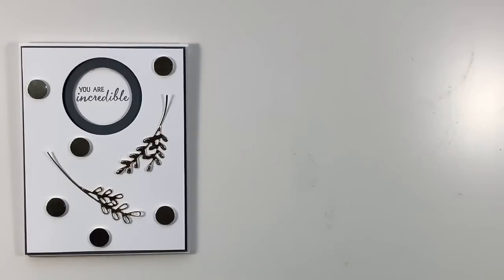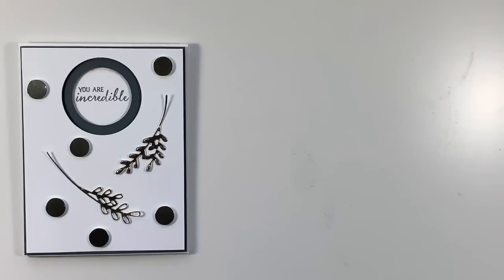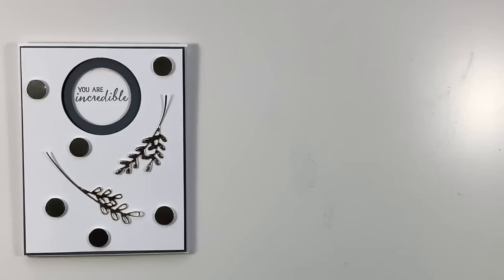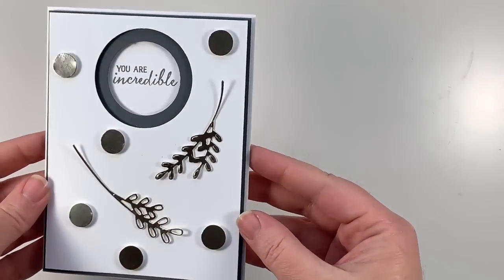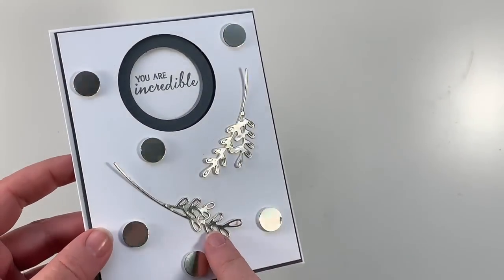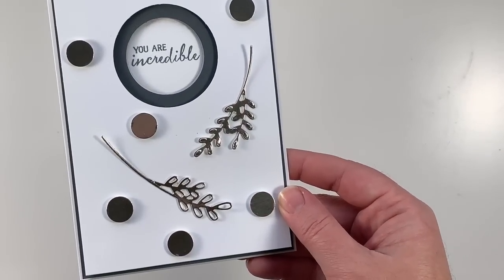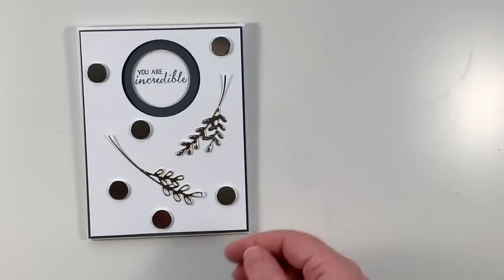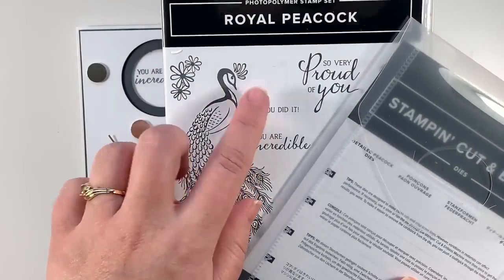So I have a few punches from the annual catalog that have been staples in my punch toolbox for a while now. I don't have any new punches to show you, but I always love to find different ways to use the punches that I already have. So I'm going to do this card for you today. It uses three different punches along with a couple of the die cuts from the Detailed Peacock dies, and that's the set that I'm using today, Royal Peacock.